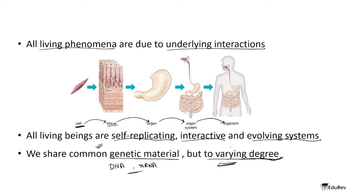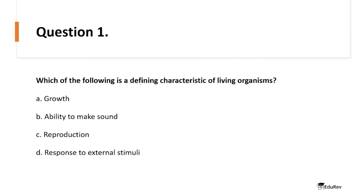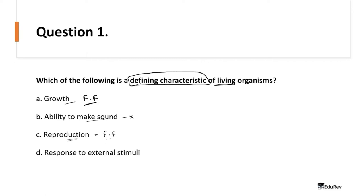Question: which of the following is a defining characteristic of living organisms? Option A is growth — when not specified, growth is not defining but a fundamental feature. Option B is ability to make sound — trees don't make sound but they are living, so this is not true. Option C is reproduction — as we know, reproduction is not a defining feature but a fundamental feature because of many exceptions. Option D is response to external stimuli, which we also call consciousness — this is a defining feature. The answer is option D.